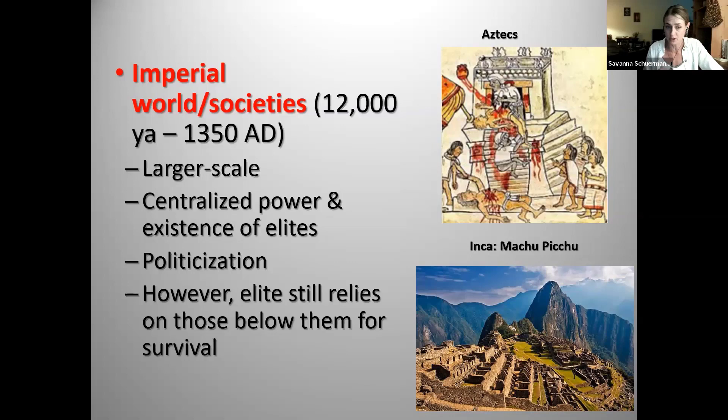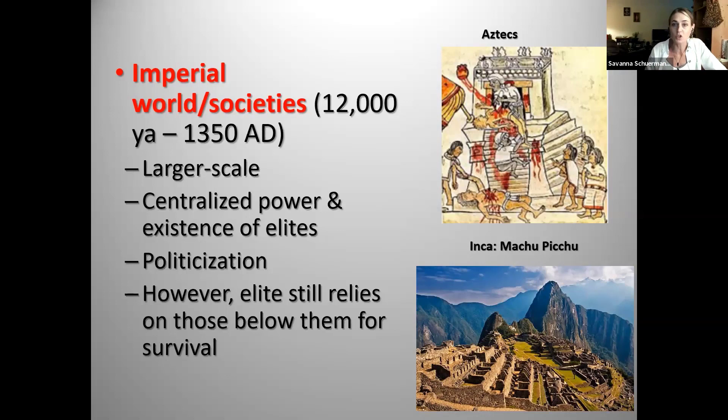People start to specialize — their time has been freed up. They're not all engaged in farming. They start specializing in occupational tasks, whether tool making, metallurgy, or craftsmanship. Specialization over time starts to create differences in people's status — different social classes. Because people aren't moving around anymore, they can accumulate wealth over time, not just within a lifetime but over several generations. You start seeing major differences in wealth and status.